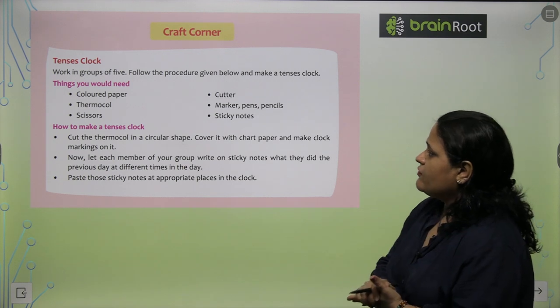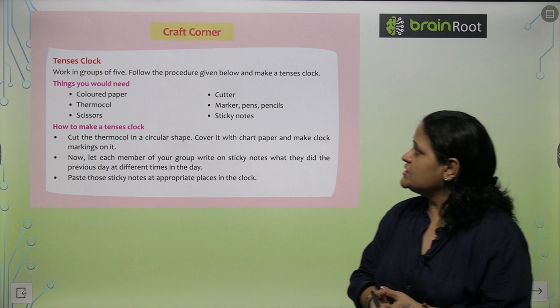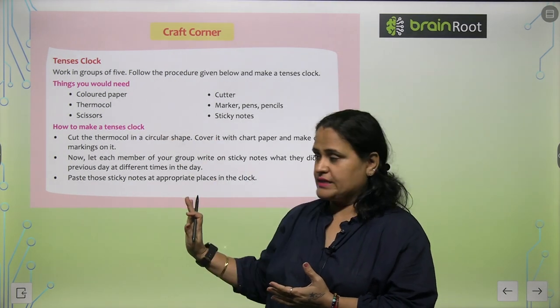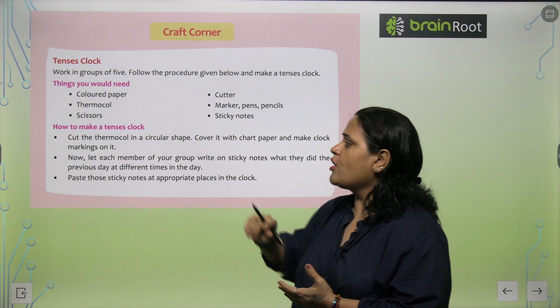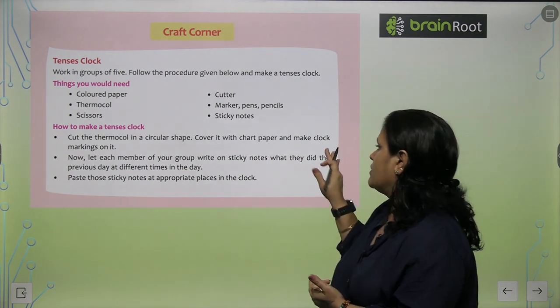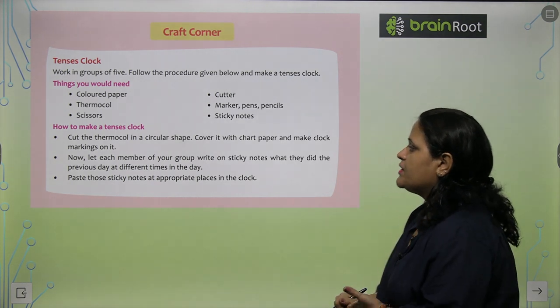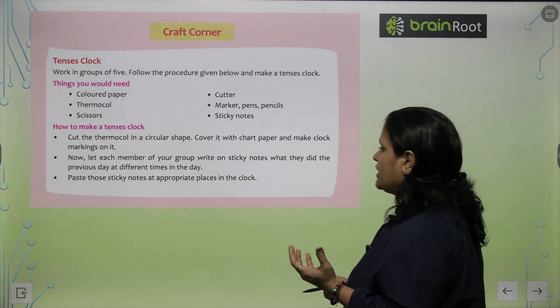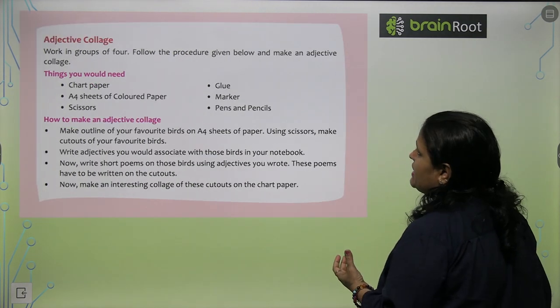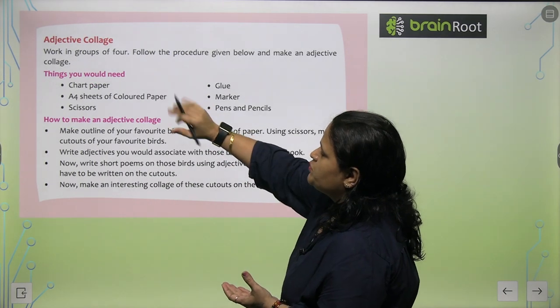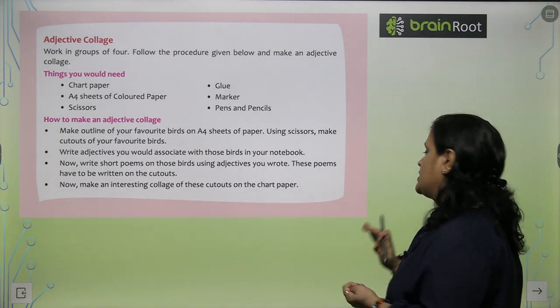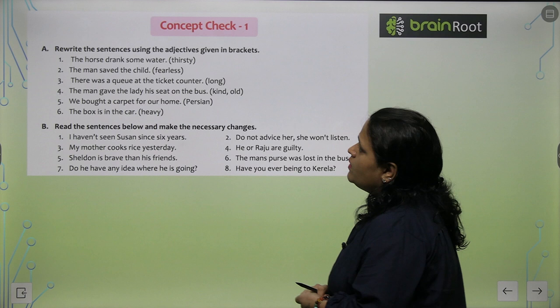Now the craft corner: Work in group of 5, follow the procedure given below, make a tenses clock. Things you need: colored paper. This is the craft exercise, is mein aapko ek tenses ki clock banani hai. Cut the thermocall in a circular shape, cover it with chart paper and make clock markings on it. Now let each member of your group write on sticky notes what they did the previous day at different times in the day. So ye jab aap banayenge, is mein aapko adjective collage banana hai. Work in group of 4, follow the procedure given below and make an objective collage. So these are some craft exercises.